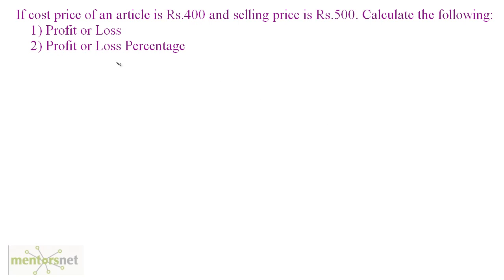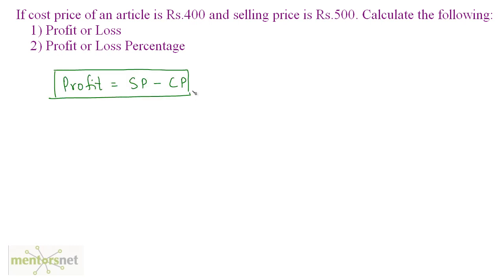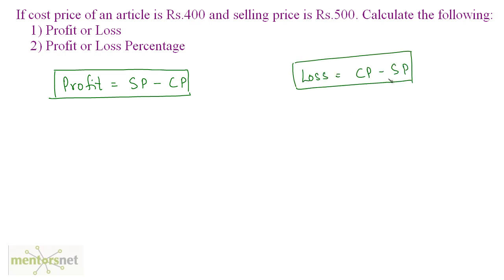The formula for profit is the selling price minus cost price. If the selling price is less than the cost price, then it is a loss, and the formula for loss is the cost price minus the selling price. In this case, the selling price is greater than the cost price, which means there is a profit. So profit is equal to 500 minus 400, which gives us a profit of 100 rupees.